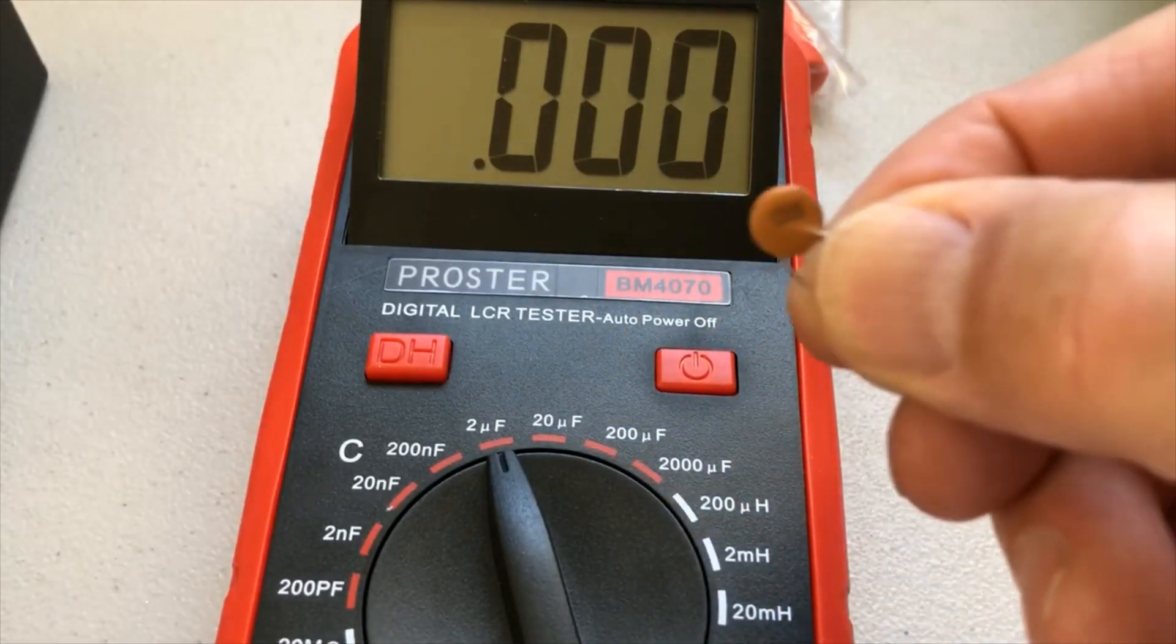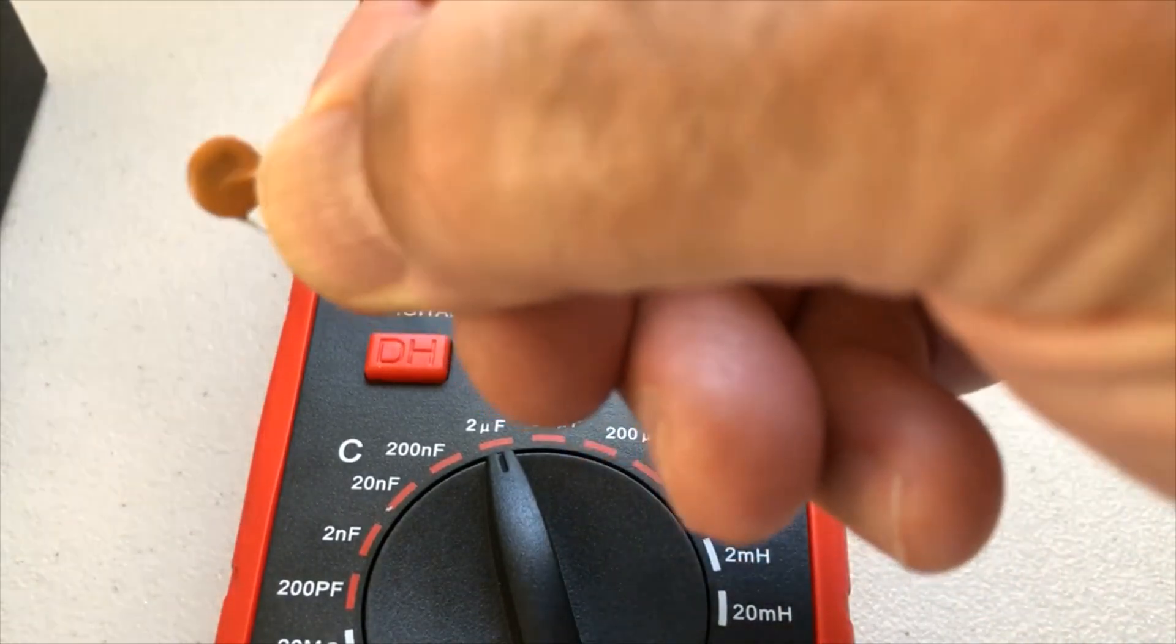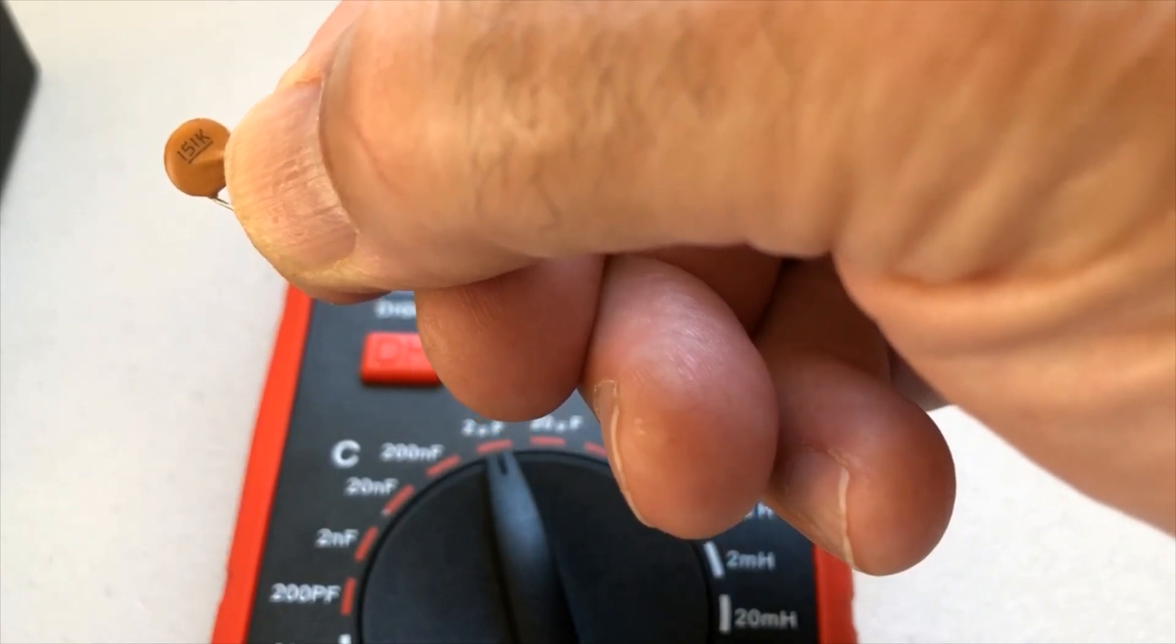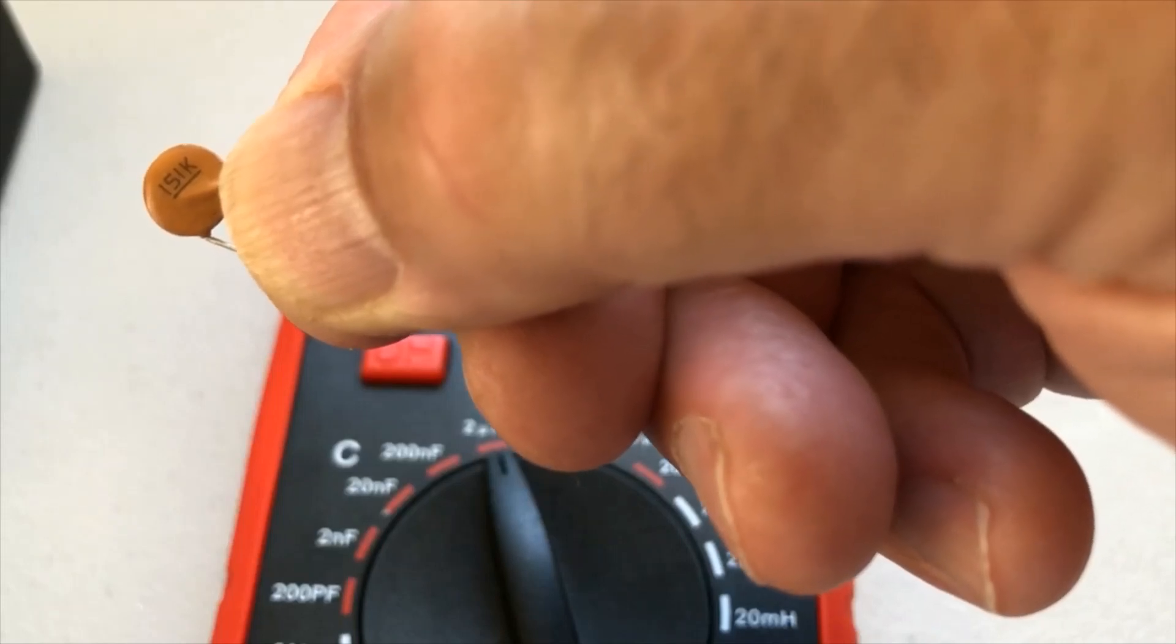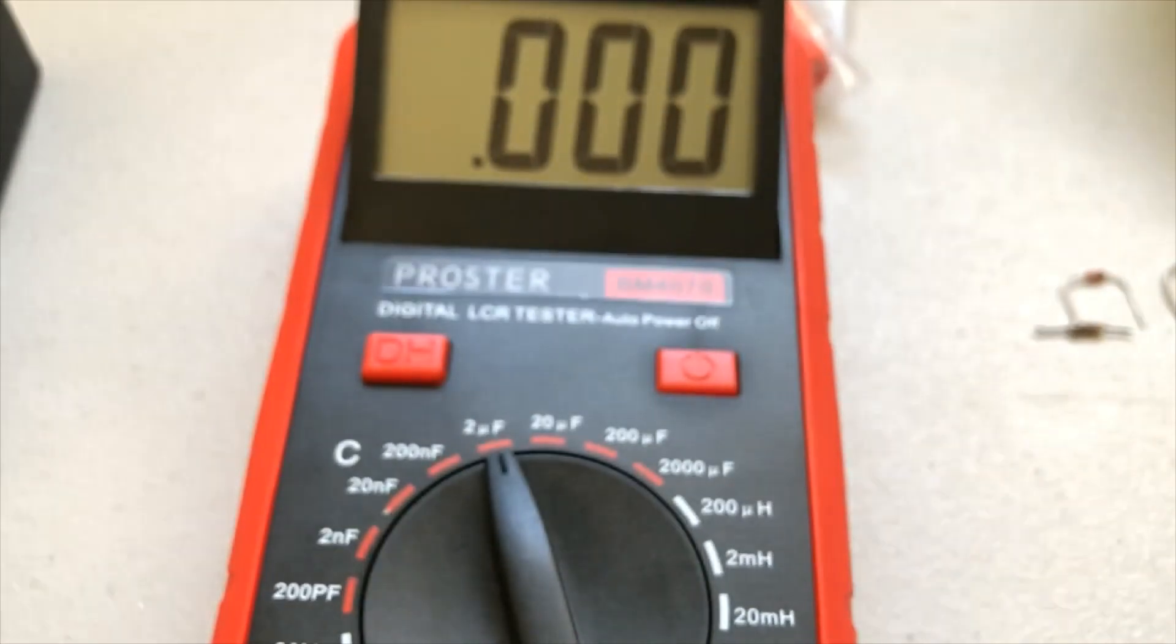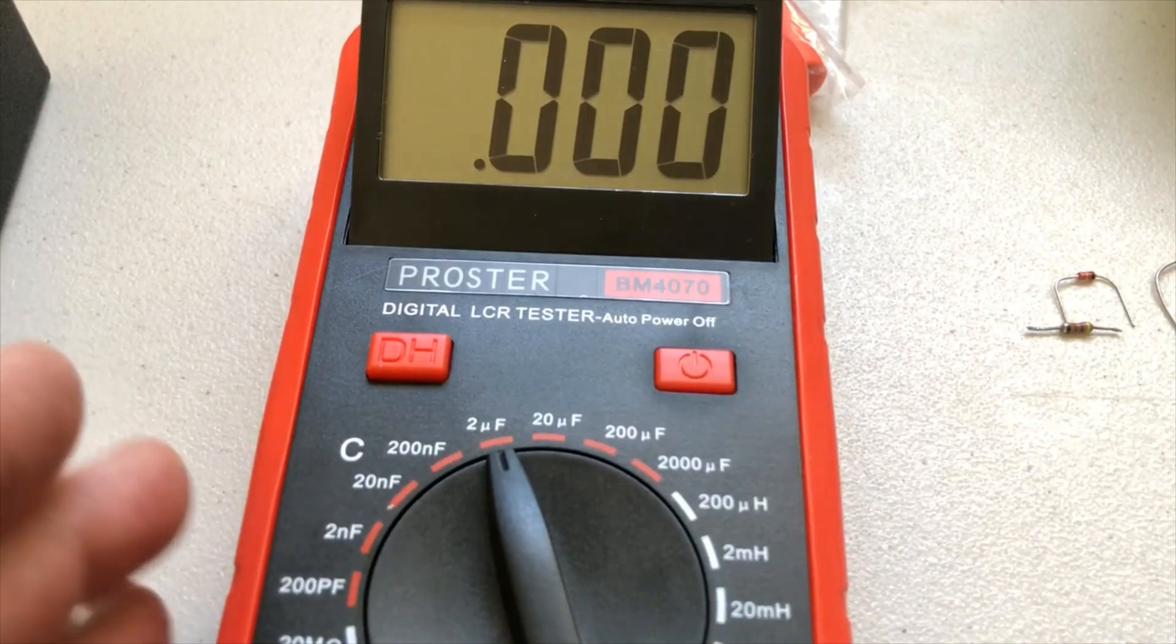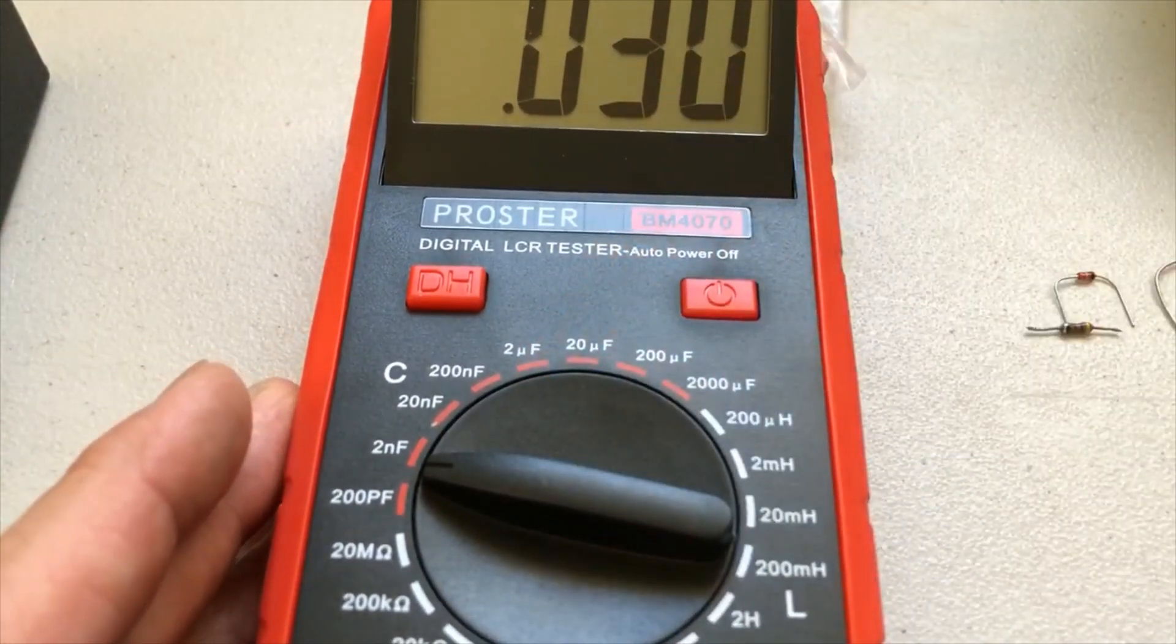Next here, we have a ceramic capacitor. Like I said, these usually don't go out. But let's go ahead and look at the value on here. Looks like a 151k. Now we have to convert that to farads. To save you the math here, after I convert it, that is 0.15 nanofarads. So we're going to have to go down here and we'll put it on 2 nanofarads.